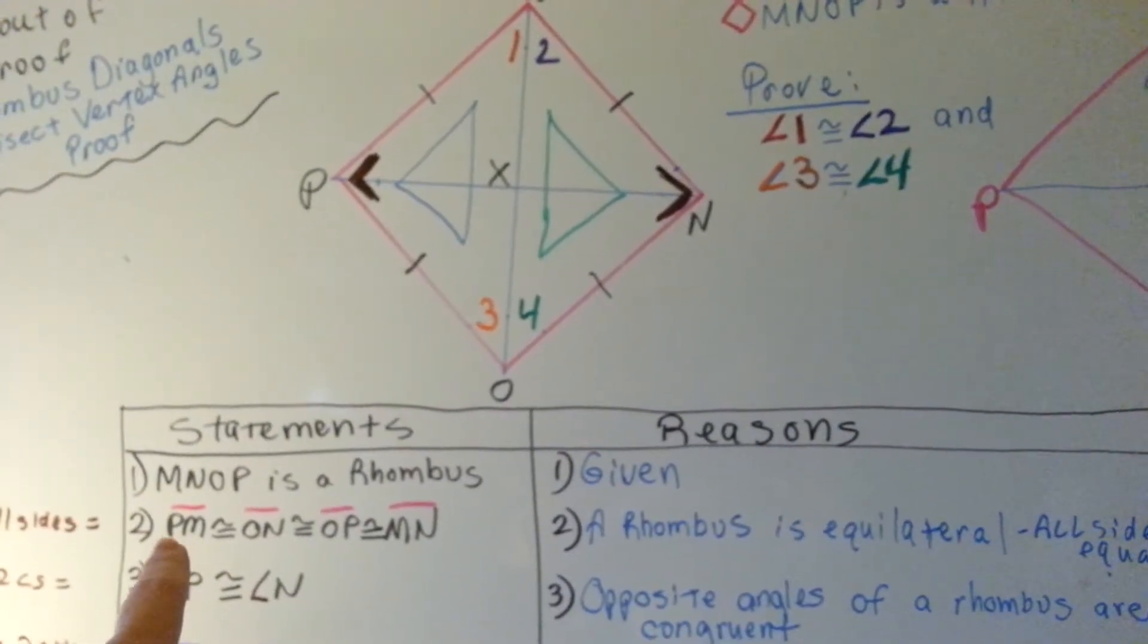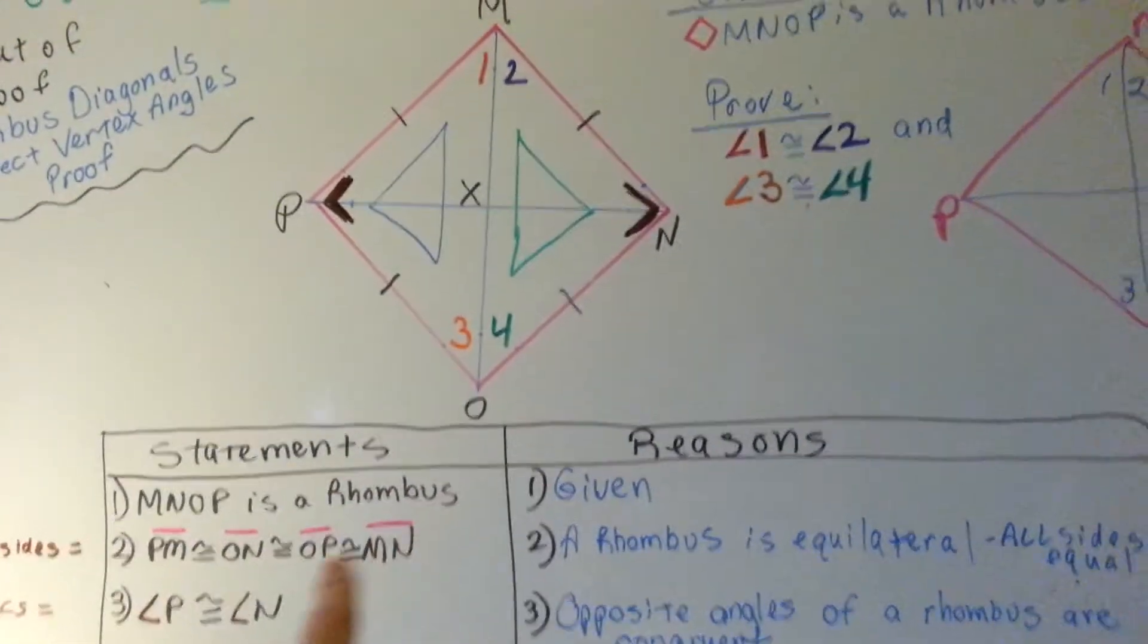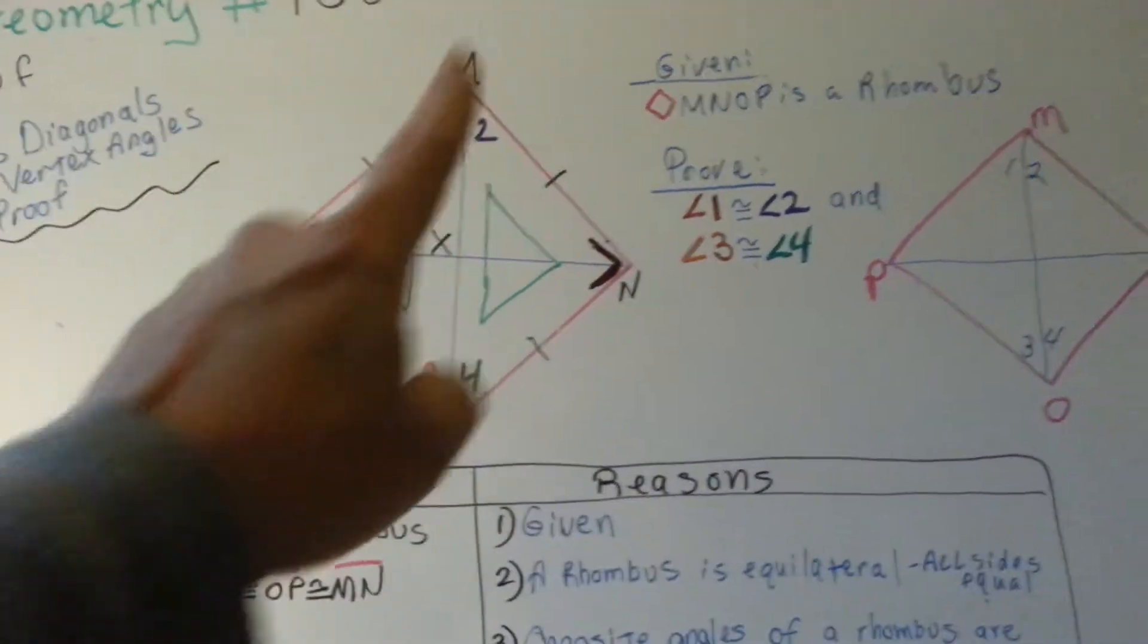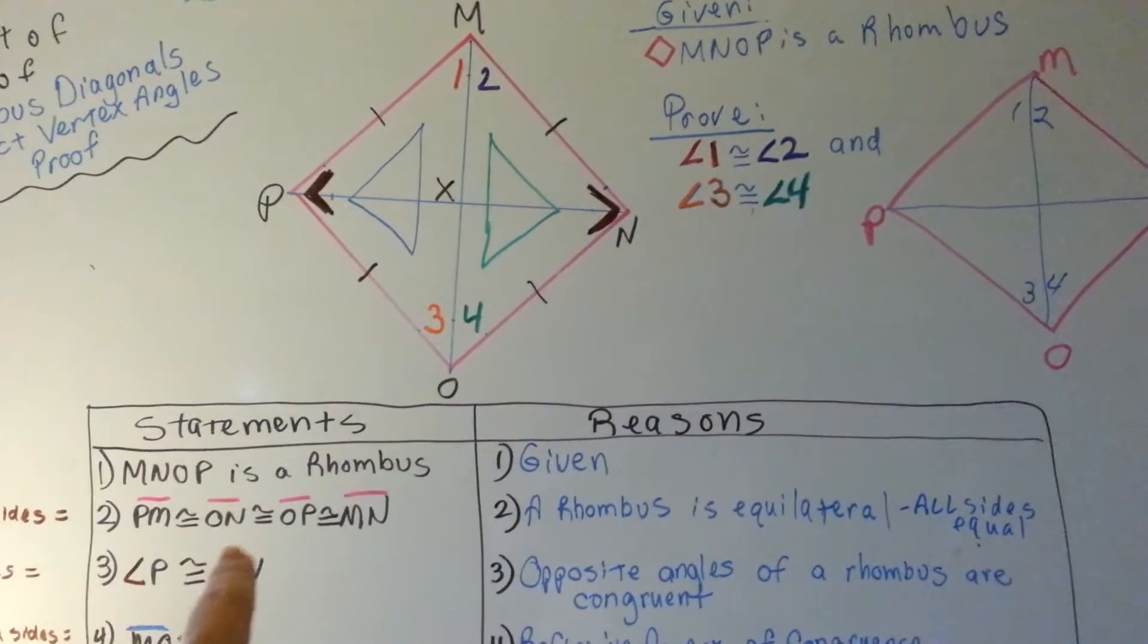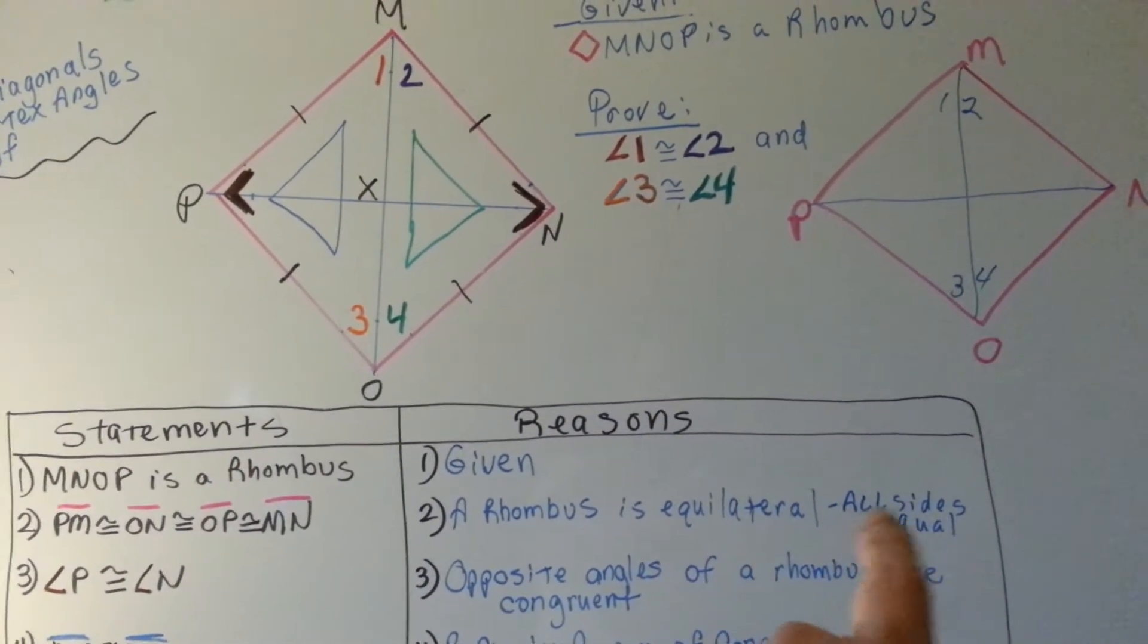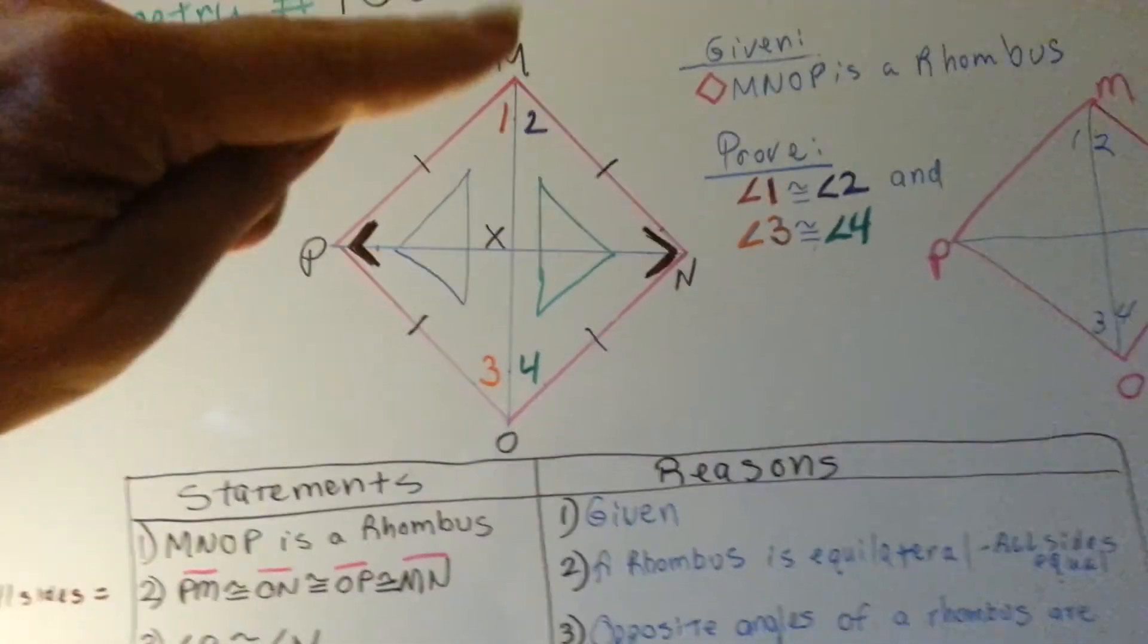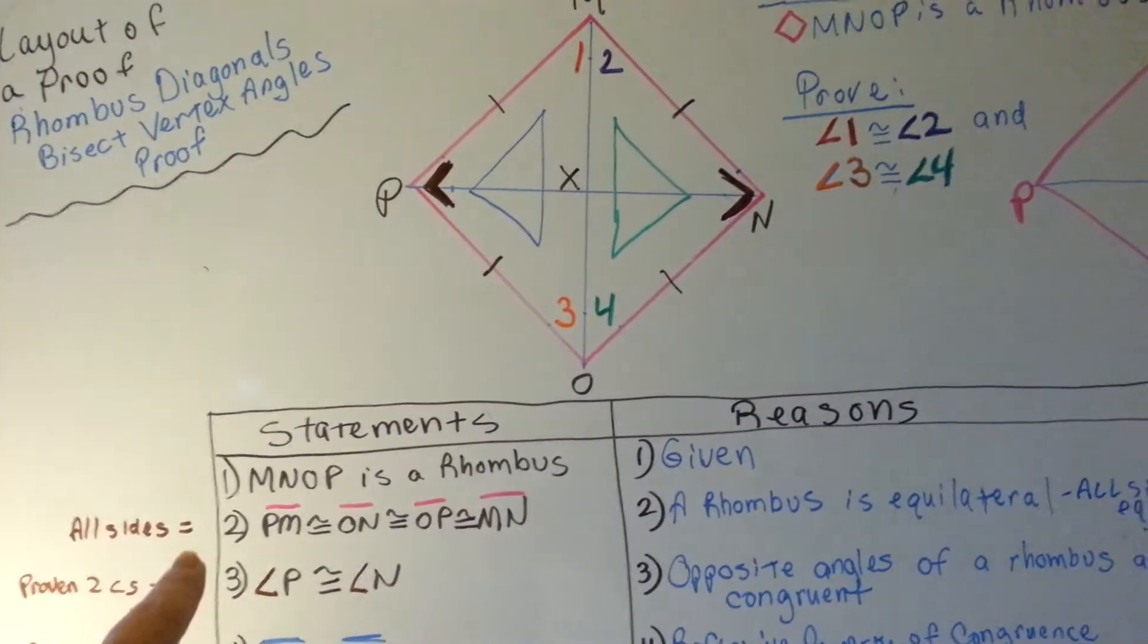And that P-M, all these pink lines, that's why they have pink lines on top of them, that all the pink lines are congruent to each other. And our reasoning is that a rhombus is an equilateral. Equilaterals have all equal sides. They're all equal length. Now that we've said all the sides are equal, we're at that point.